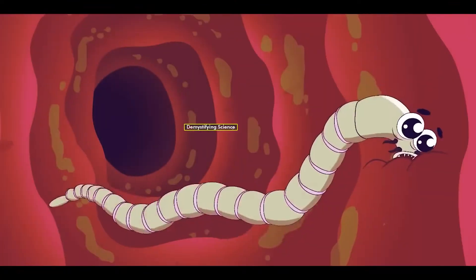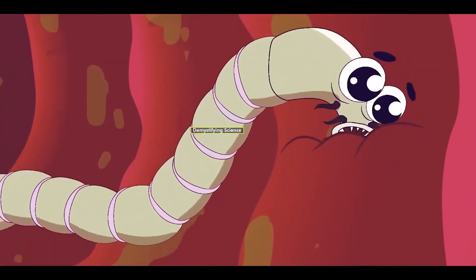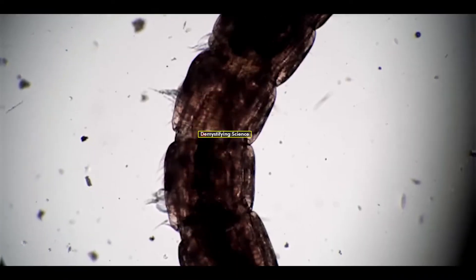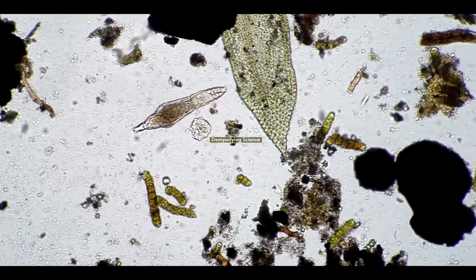Now, let's understand how elephantiasis develops. Some roundworms complete their life cycle in both humans and mosquitoes. However, since roundworms complete their larval stage in mosquitoes, they do not harm the mosquitoes themselves.